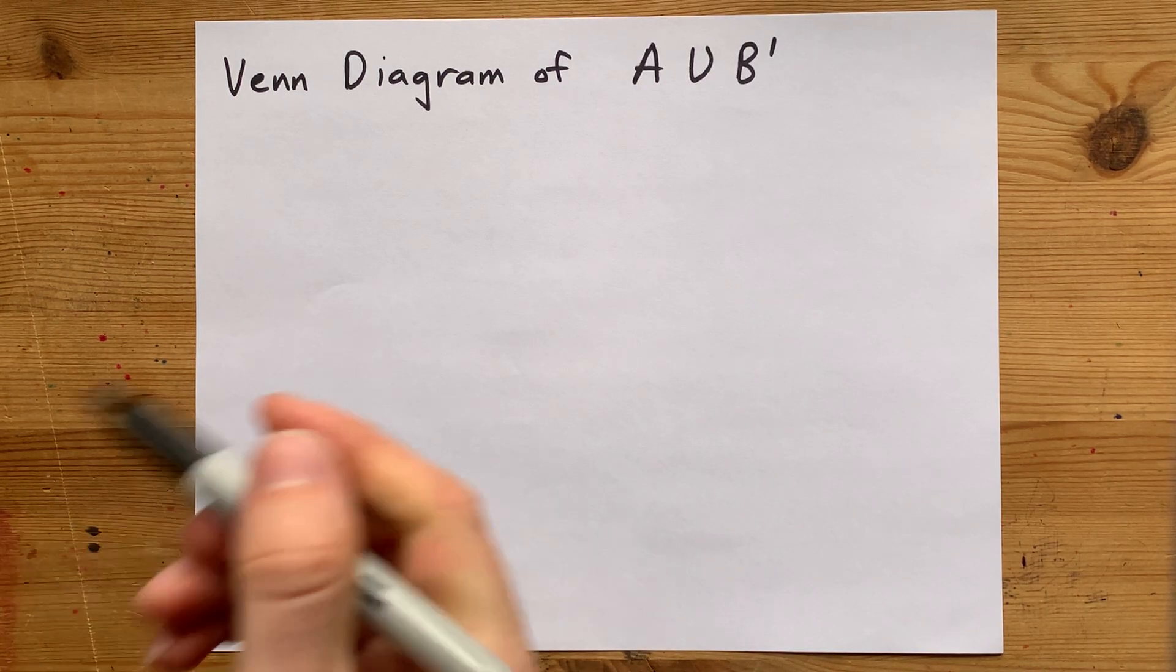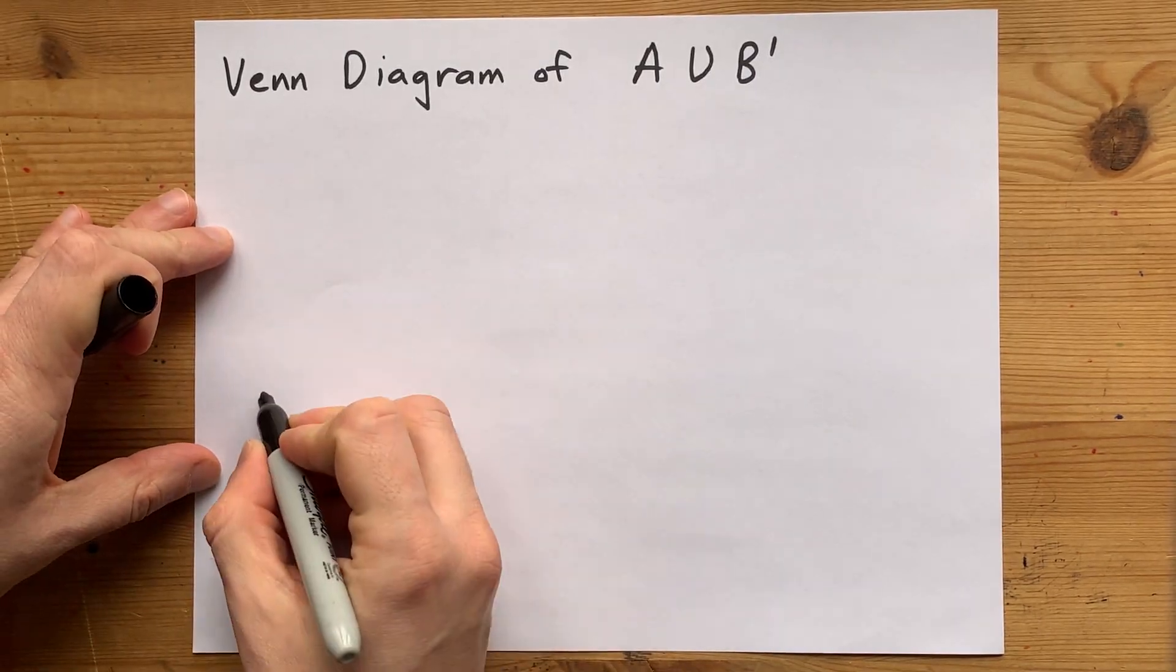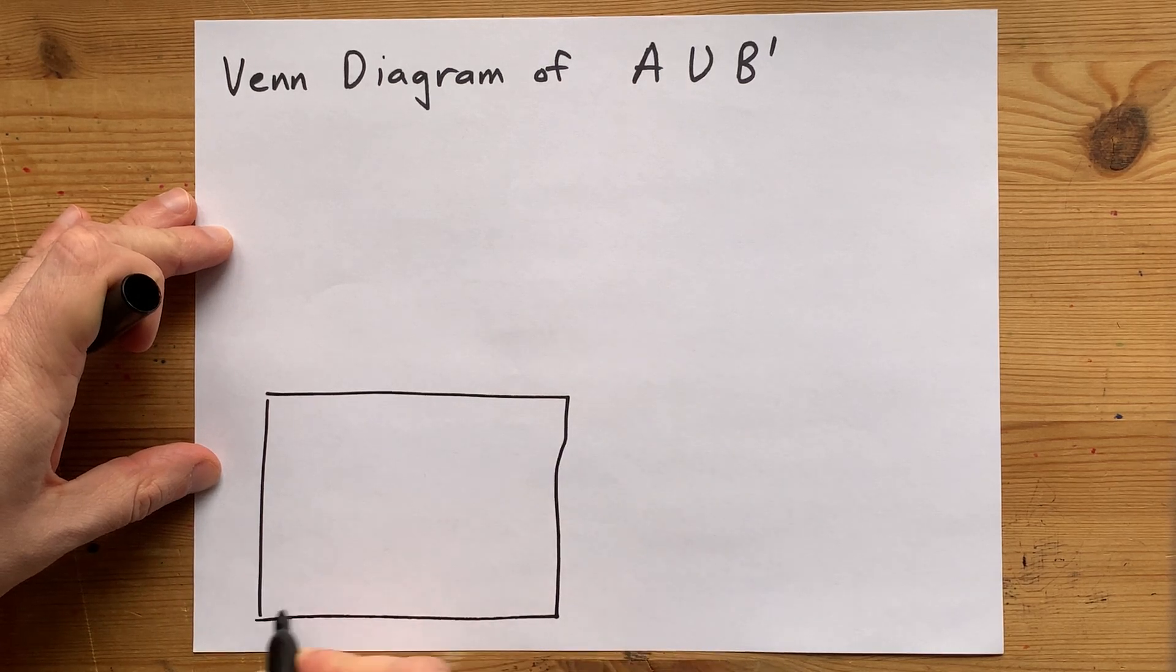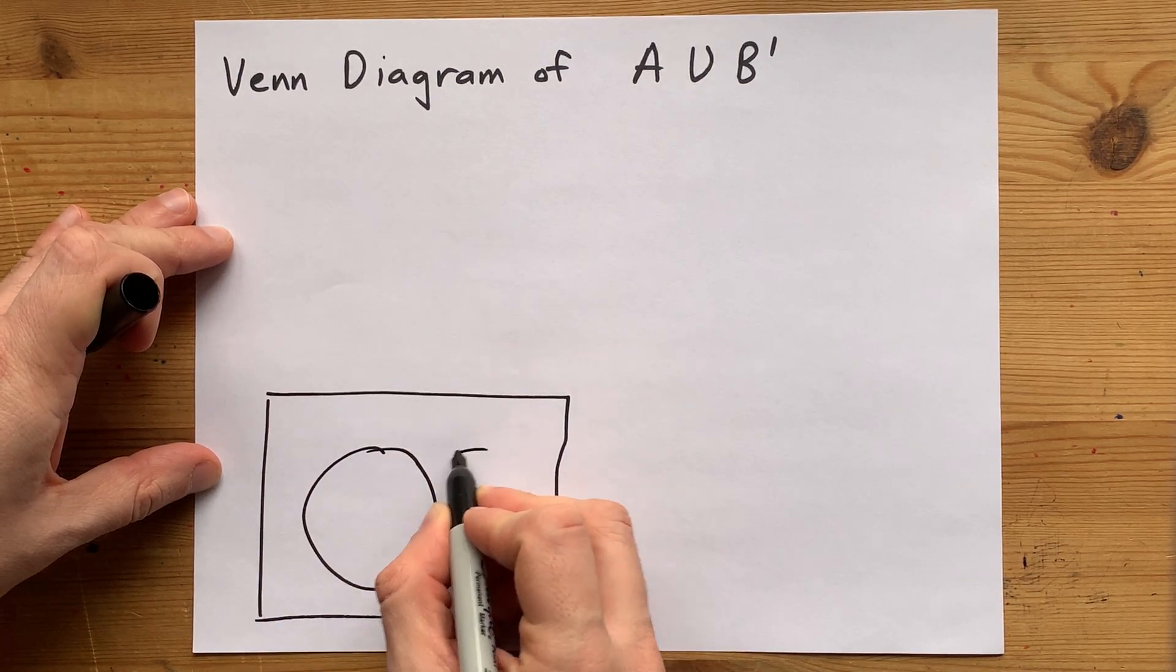We're going to do the Venn diagram for A union B complement. Now, it sounds like a lot of moving parts, but it's really not too bad.